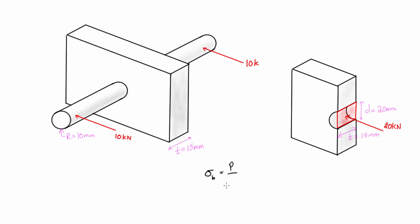Let's call it P, over the area of this rectangle that we're dealing with, this projection of the rod onto the block.